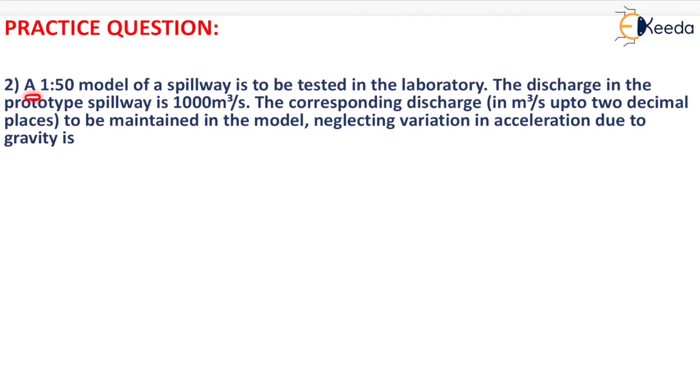Question is written as: A 1:50 model of a spillway is to be tested in the laboratory. The discharge in the prototype spillway is 1000 meter cube per second. The corresponding discharge in meter cube per second up to two decimal places to be maintained in the model, neglecting variation in acceleration due to gravity is.